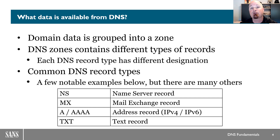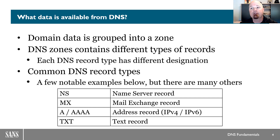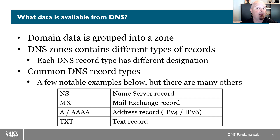We start with the name server record, which tells us: if I have a question about a particular domain, who do I speak to? In terms of the MX record — the mail exchanger record — it tells us: if I'm sending mail to you, who do I talk to? For the A record and the Quad-A record, those are the IPv4 and IPv6 mappings between a name and an address respectively. And finally, we have text records, which are interesting because they are arbitrary text — they can be anything — meaning there may be some interesting data we can collect from them.